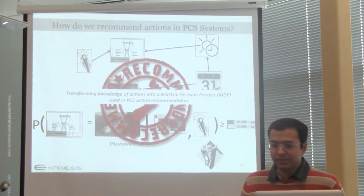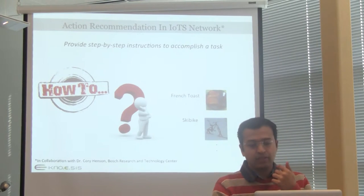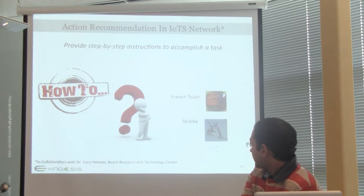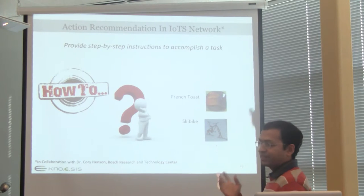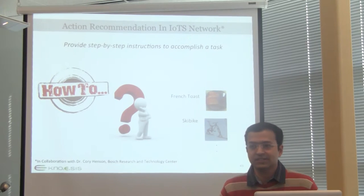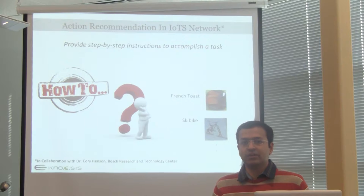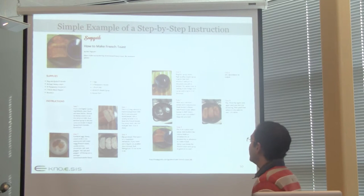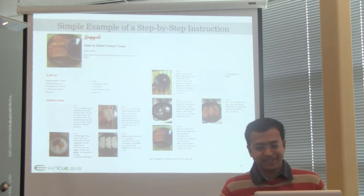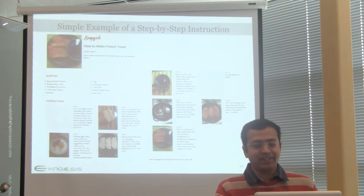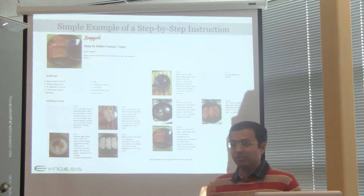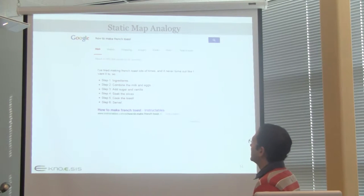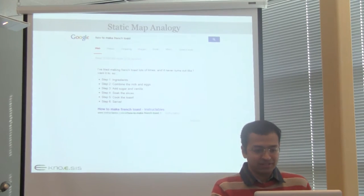This work is in collaboration with Corey Henson, who is on my committee, and is my internship work at Bosch. Action recommendation in a PCS system would look like providing step-by-step instructions to accomplish a task. This example was in the context of an IoT network where you want to get step-by-step instructions — for example, making French toast. Snap Guide is a large company that has raised $10 million and has 1 million users contributing such step-by-step instructions. Even Google has moved toward providing step-by-step instructions rather than web pages.